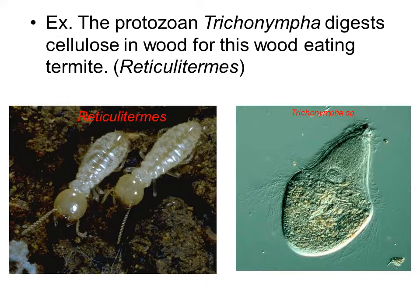Another example of a mutualistic relationship is found in the guts of termites. This protozoa, trichotinimpha, is the organism that lives in the gut of the termite and actually digests the cellulose that is in wood. Everyone knows that termites eat wood, but what actually digests the cellulose that makes up the wood is a mutualistic relationship between trichotinimpha and the actual termite.